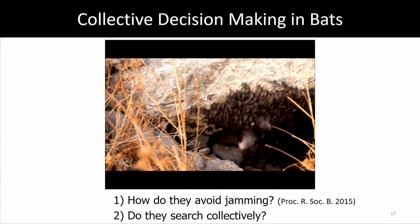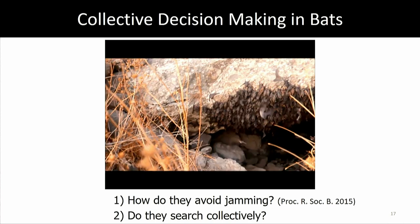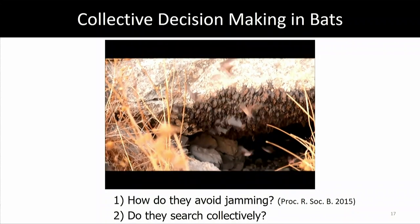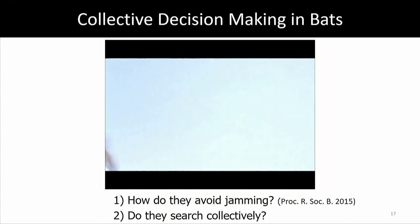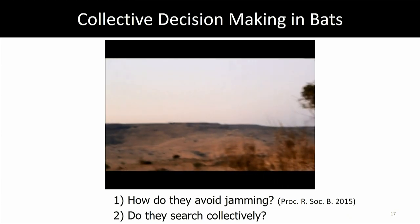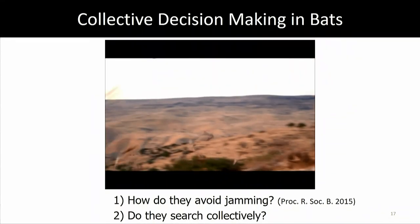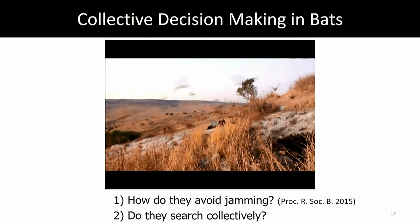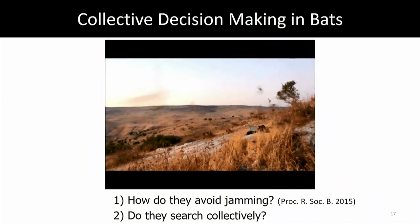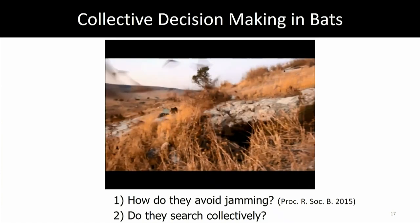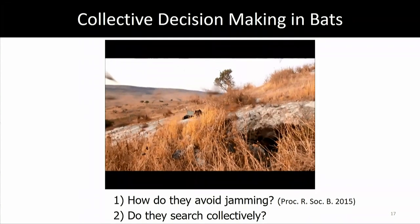Some bat species will aggregate outside their cave before swarming out. The greater mouse-tail bats emit social calls — not echolocation — during this dangerous moment when a kestrel tries to grab one of them. These bats then fly together for several kilometers, and what happens later we didn't know until we placed GPS devices on them. We found that these bats move together in groups throughout the night.